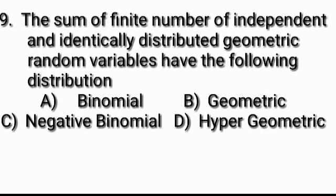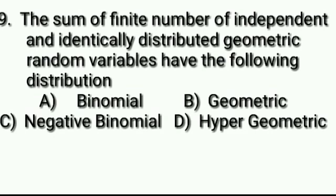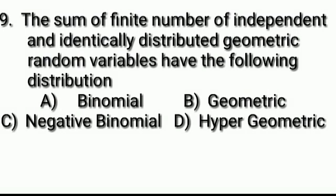Question number 9: The sum of a finite number of independent and identically distributed geometric random variables follows which distribution? Options: A: binomial, B: geometric, C: negative binomial, D: hypergeometric. Answer: Option C, negative binomial.